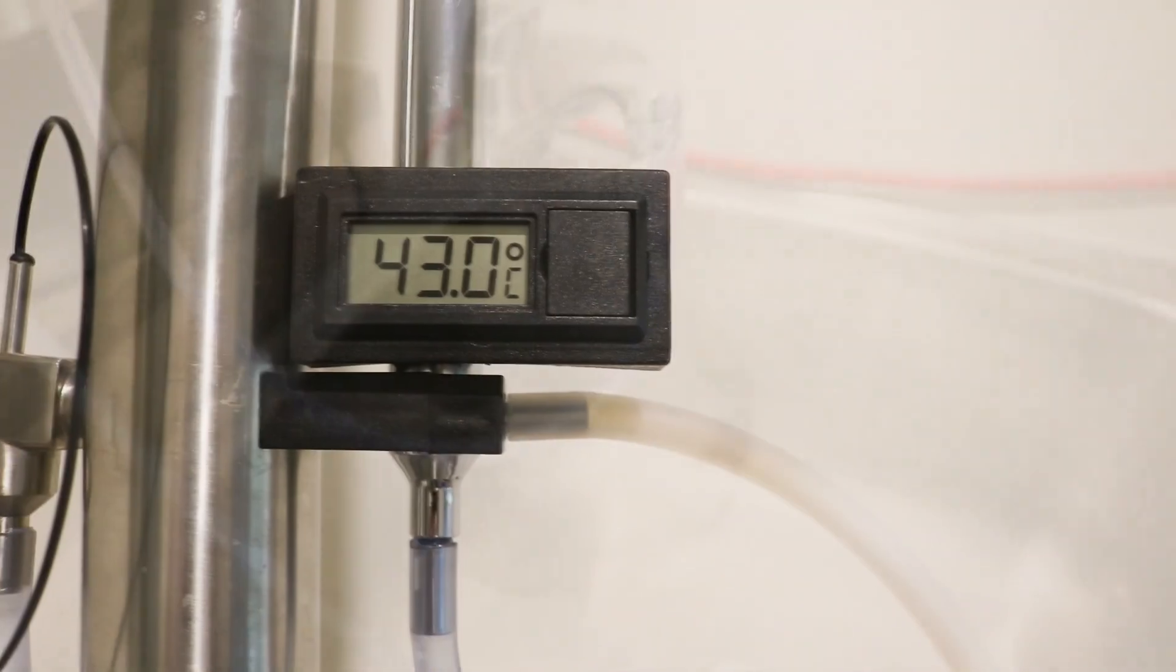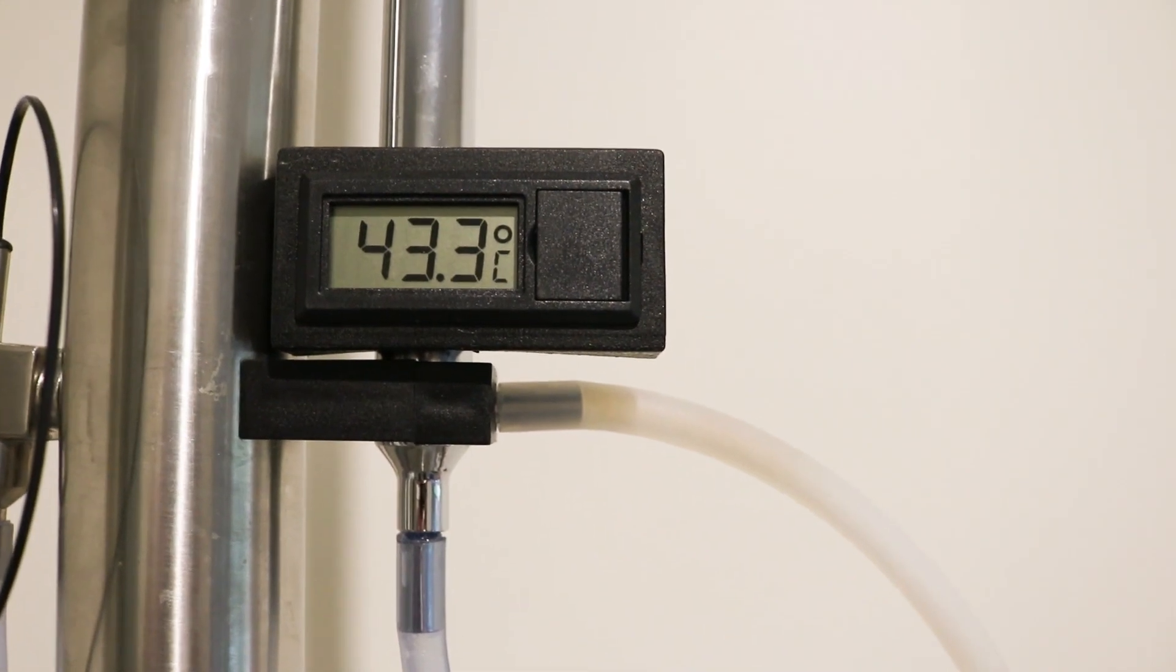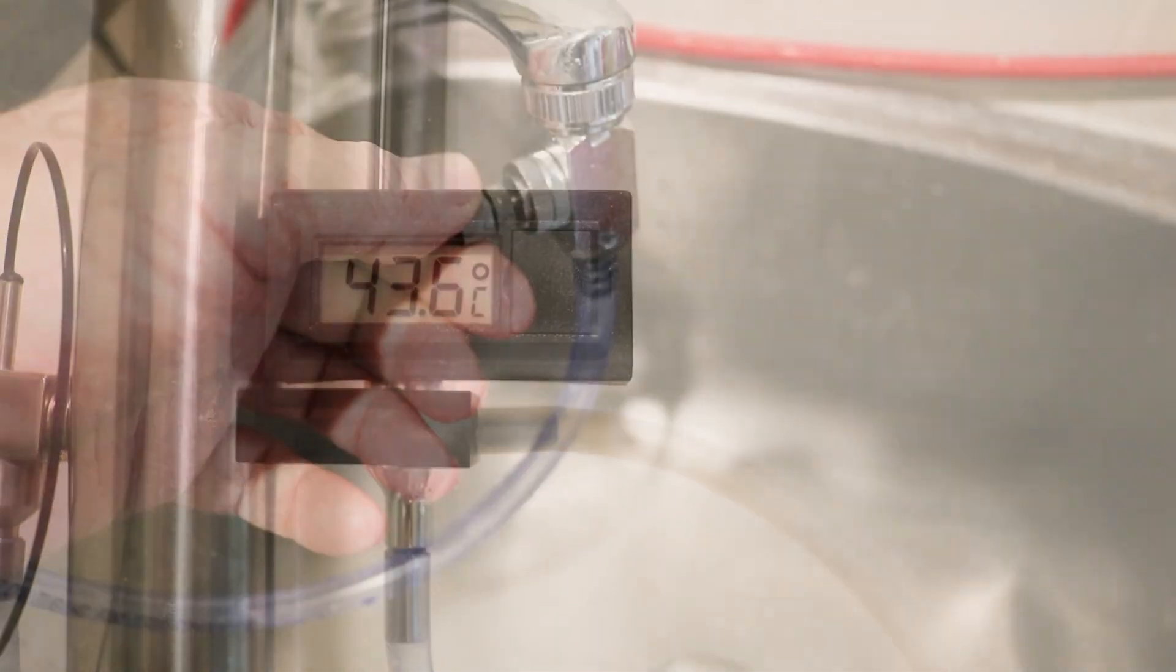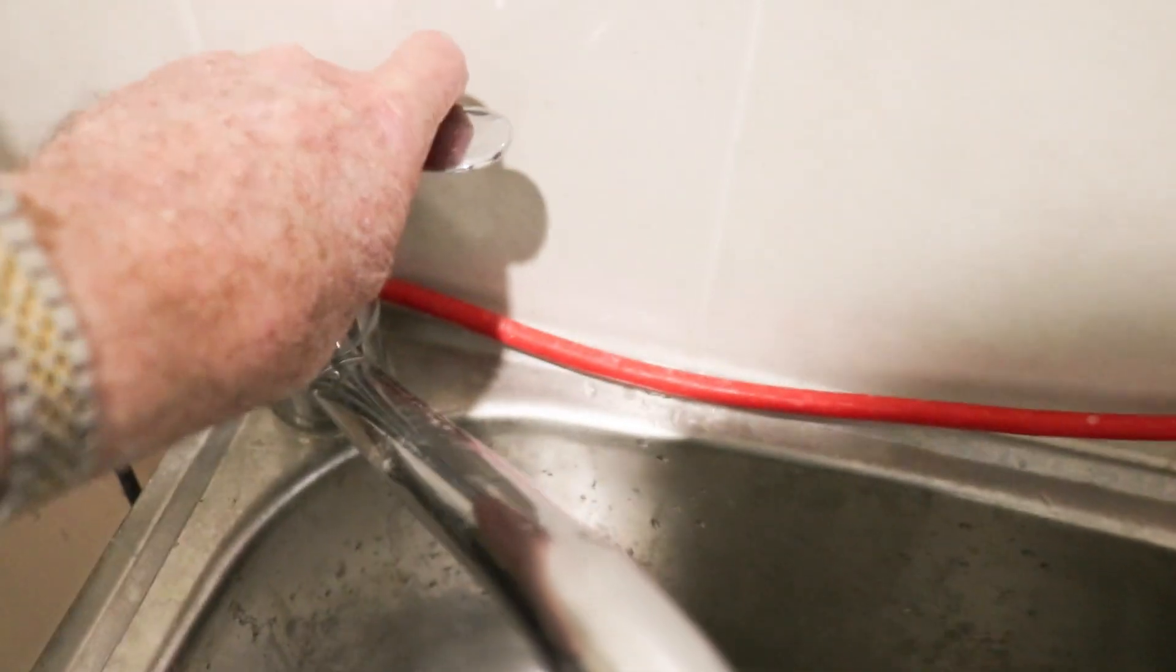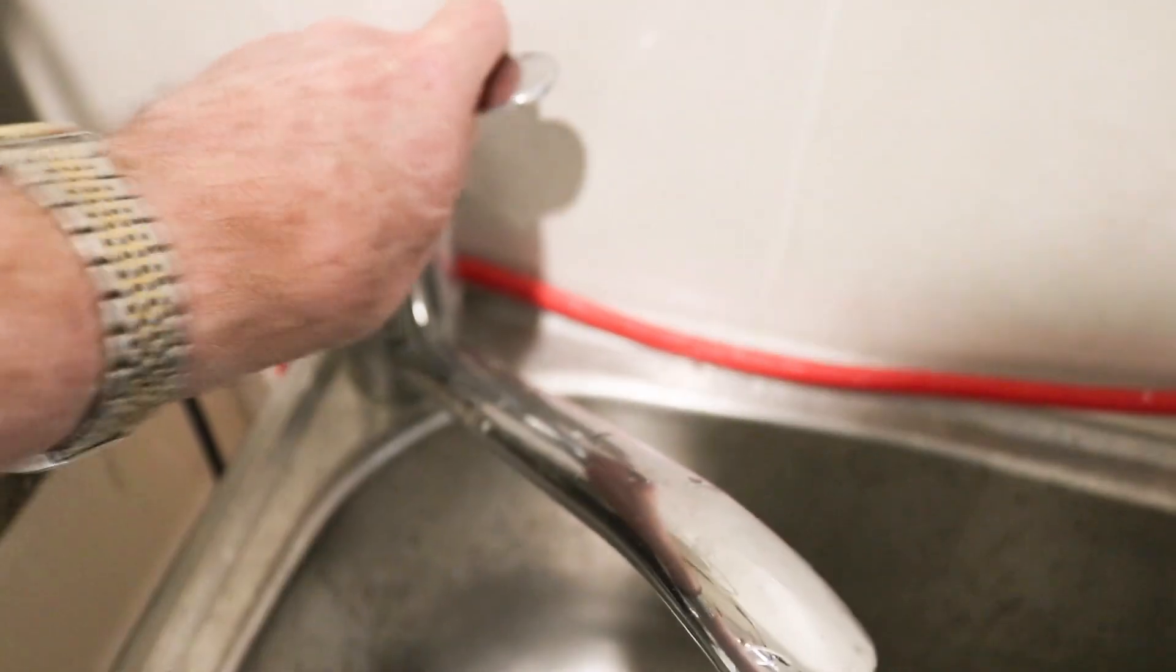But we want to firstly get the bad stuff out. Now, the bad stuff being acetone, methanol and ethyl acetate. Now, all of those boil at less than 77 degrees Celsius. And keeping in mind, we know that ethanol boils at 78 degrees Celsius.